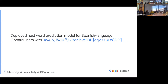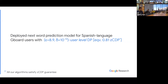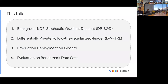Rényi differential privacy says that at order alpha, you get some RDP guarantee. zCDP is a single parameter — if my zCDP is rho, then my Rényi differential privacy at order alpha is alpha times rho, so it's the linear scaling of the orders. The point is that you should not interpret the number 8.9 as the right one to reason about.